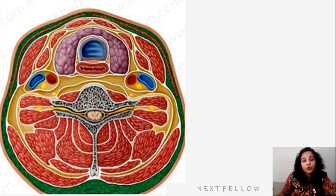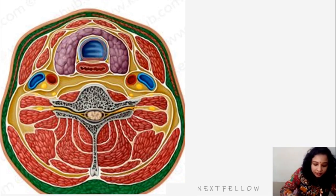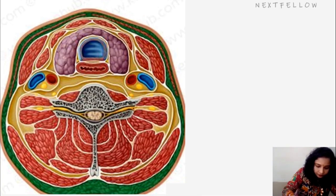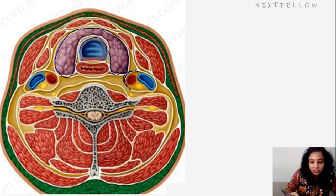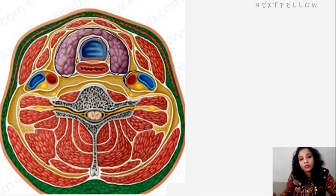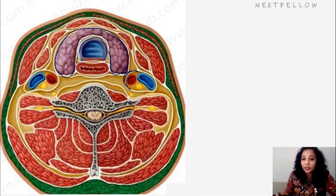Here is the transverse section of the neck at the level of the thyroid gland. We can see the pre-tracheal layer enclosing the trachea in front and also enclosing the thyroid gland. It also contributes partly in the formation of the carotid sheath. Because the thyroid gland is invested by the pre-tracheal layer, during deglutition the thyroid gland moves up and down due to its attachment to the trachea via the pre-tracheal layer — this is called the ligament of Berry or suspensory ligament of Berry.